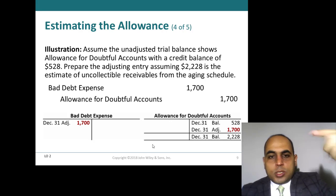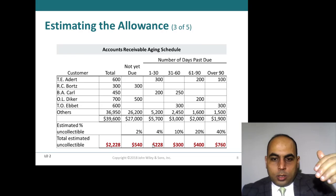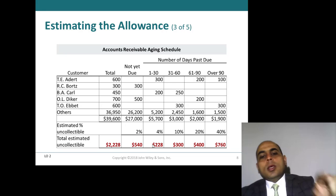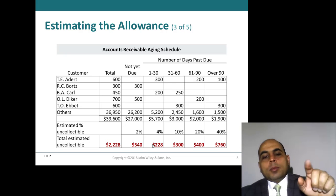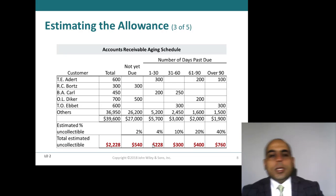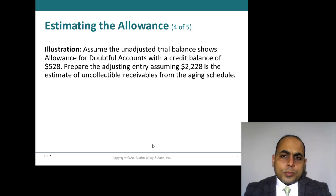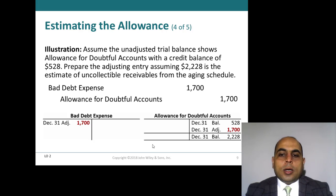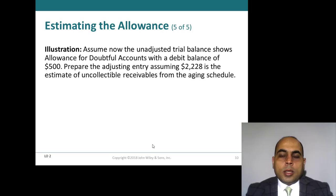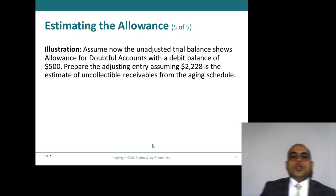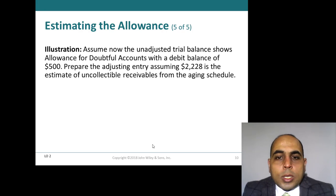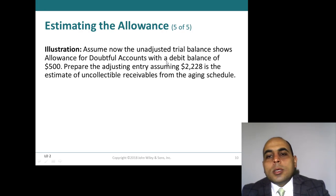To present this on the financial statements: accounts receivable totals $39,600, and the contra account — allowance for doubtful accounts — is credited by $2,228. You subtract to find the net accounts receivable. Now let's go to the next scenario.